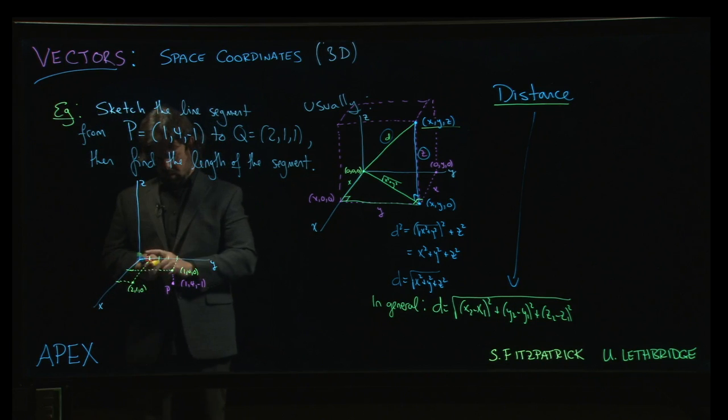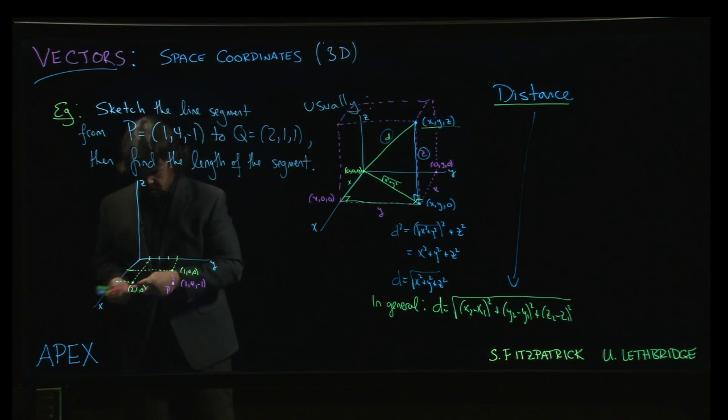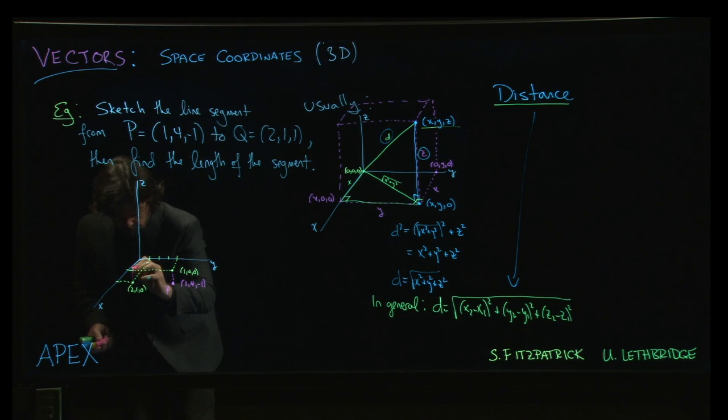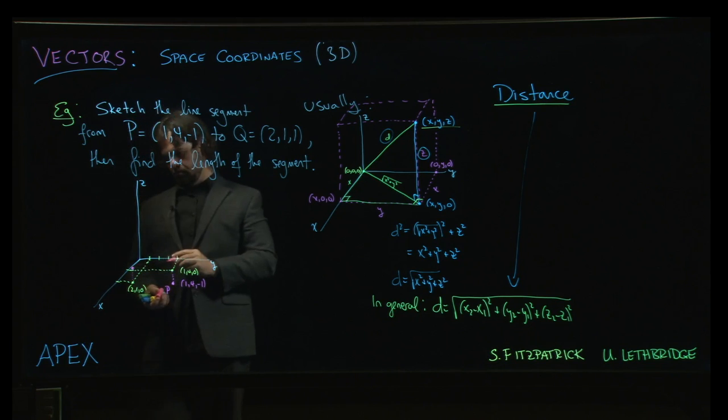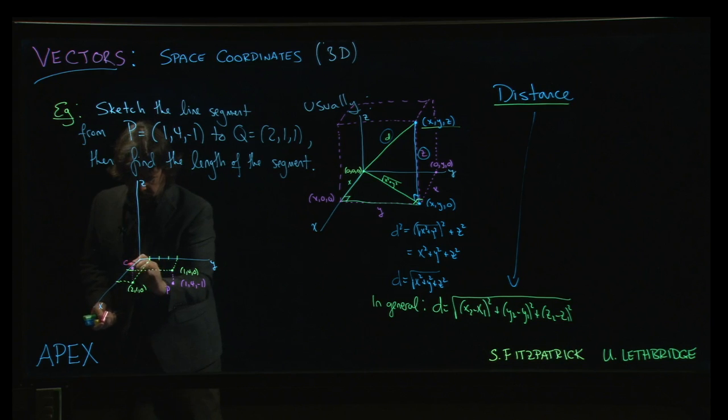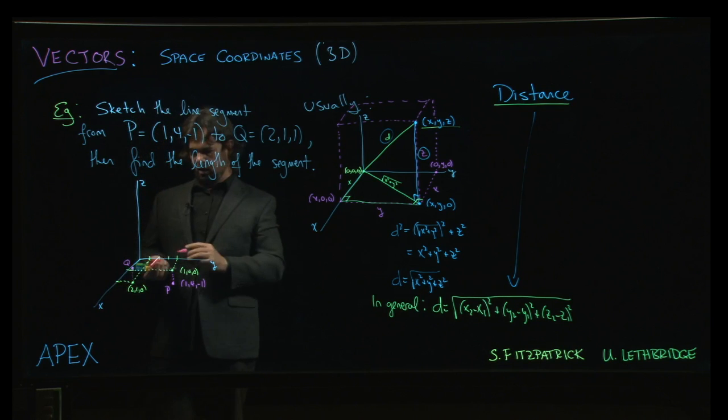And then we move up 1 in the z-direction. So we're going to go up 1. Gets us to sort of something that looks like that. So let's call that our point Q.